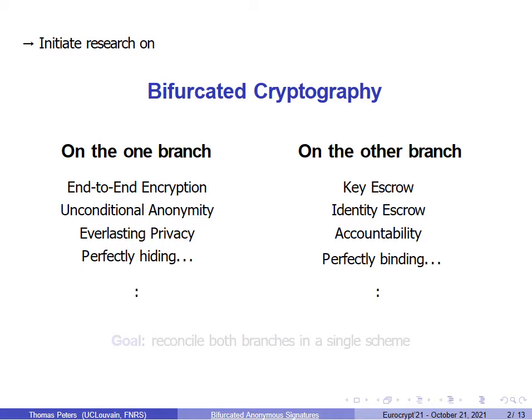On the one branch, we have the primitives for privacy-aware users, such as end-to-end encryption or schemes with unconditional anonymity or everlasting privacy. And on the other branch, we have the primitives designed to prevent abusing the cryptosystem, where one would like properties such as key escrow, identity escrow, or accountability.